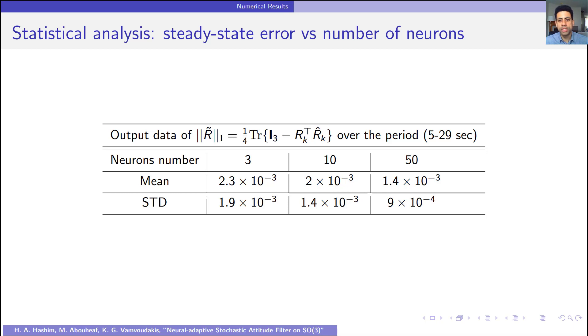In this table we see the difference between 3 neurons, 10 neurons, and 50 neurons.